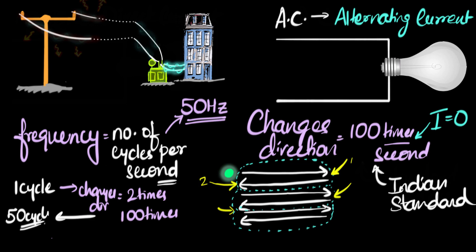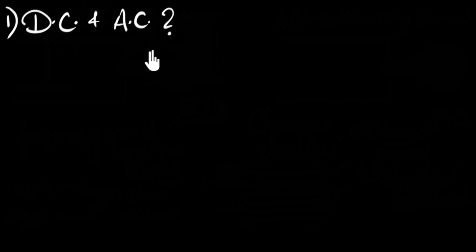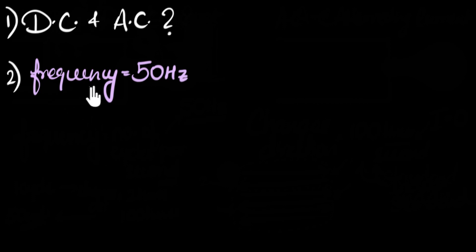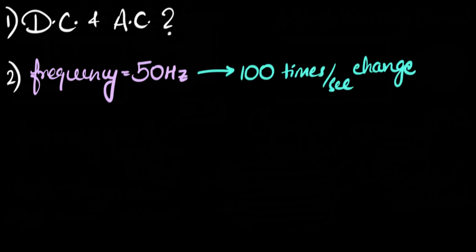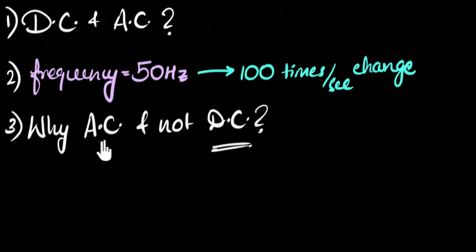Let's summarize what we learned. Can you recall what AC and DC stand for and what the difference is between them? What is the meaning of the word frequency, and what does it mean to say the frequency is 50 Hertz? Can you explain why if the frequency is 50 Hertz, the current is changing its direction 100 times per second? And finally, can you explain why we go for AC for power transmission to our houses and not DC? If you have difficulties, feel free to go back and re-watch that part of the video.